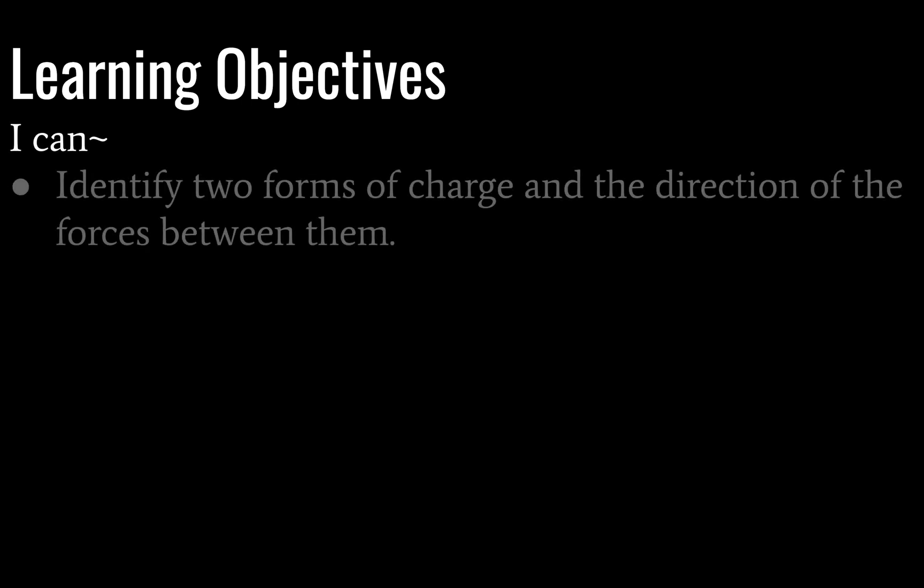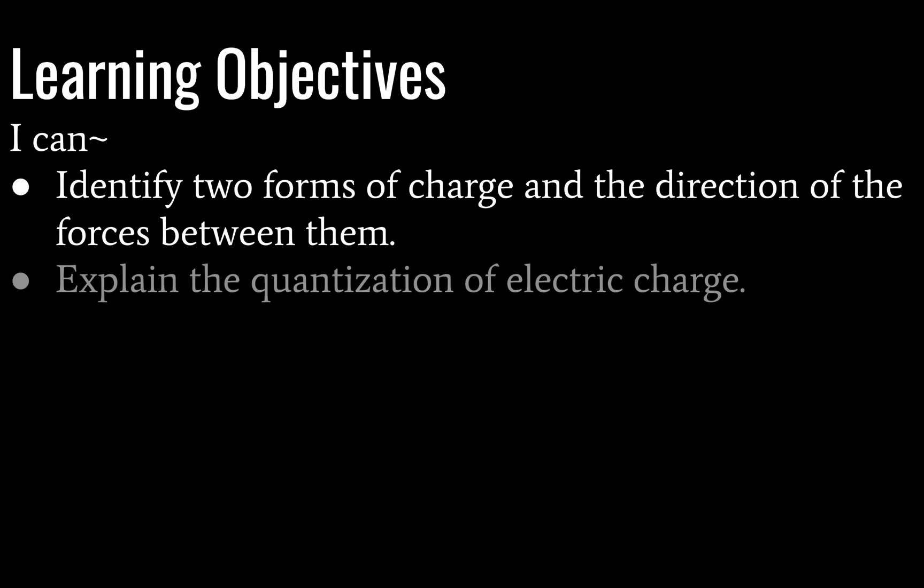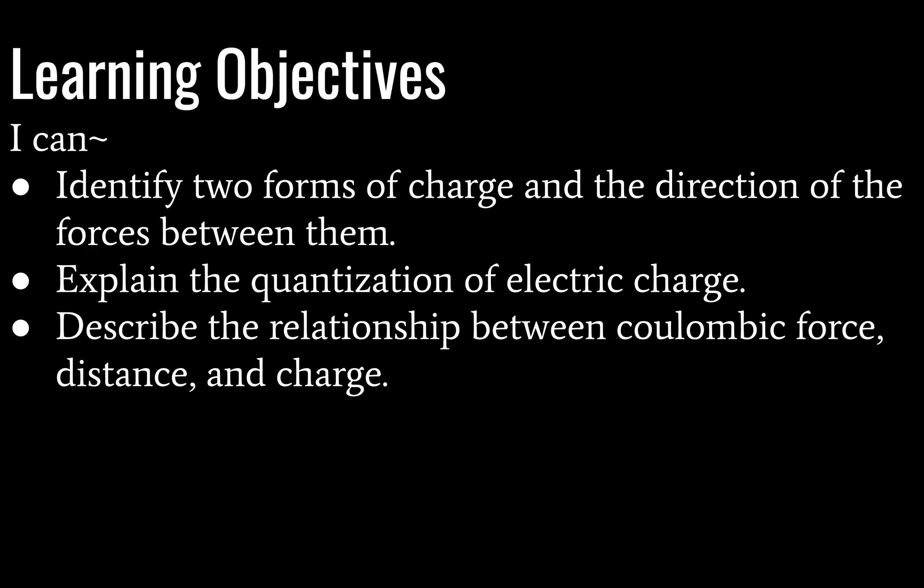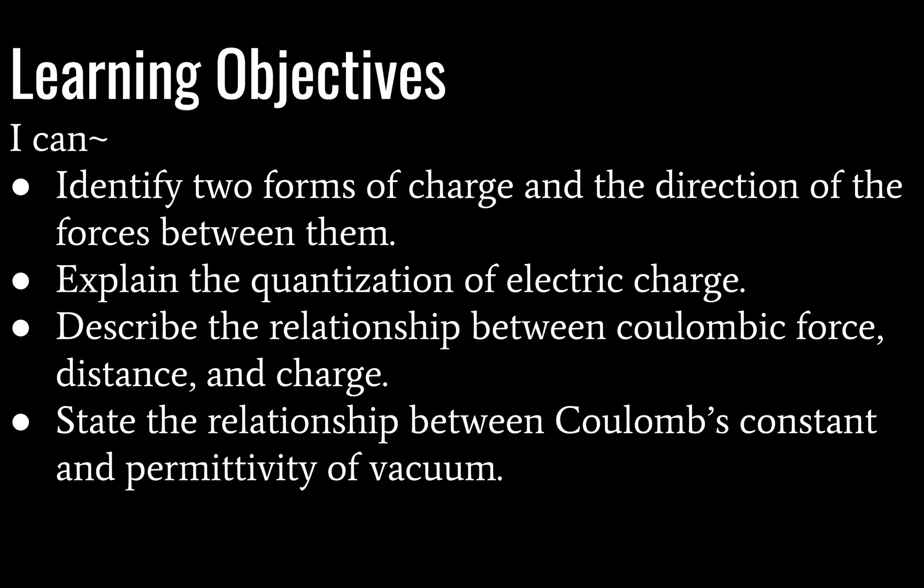First let's go over your learning objectives. By the end of this lesson, you'll be able to identify two forms of charge and the direction of forces between them. You will be able to explain the quantization of electric charge, describe the relationship between Coulombic force distance and charge, and state the relationship between Coulomb's constant and permittivity of vacuum. Finally, you'll be able to solve problems involving Coulomb's law, but that will be outside of the scope of this lesson. That will be work you do on your own.